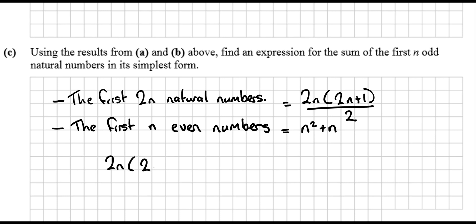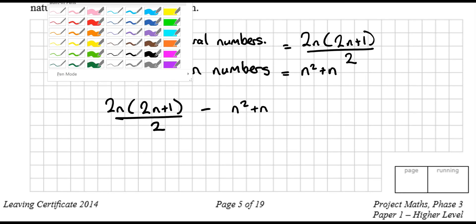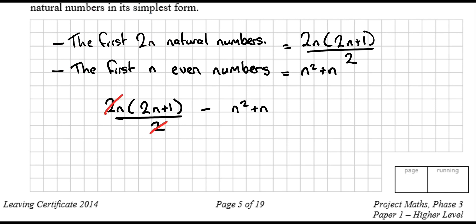If we take those two numbers away from each other, we would only be left with the odd numbers. So, 2n by 2n plus 1, all over 2, minus n squared plus n. The 2 and the 2 cancel. n gets multiplied in, so we have 2n squared plus n minus all of this. Now, we should have had a bracket around that because we're subtracting the whole thing. So, it's minus the n squared minus n. What do we get left with? It's just n squared. That is what you'd get if you had the first n odd numbers. The sum of the first n odd numbers, or natural numbers, sum to n squared.